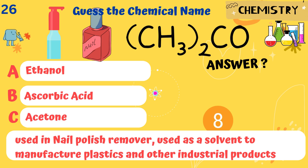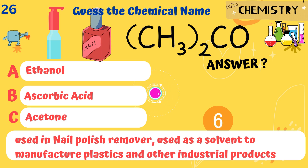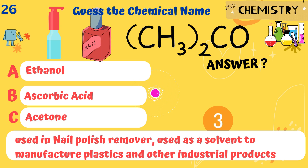C3H6O. It is used in nail polish remover and as a solvent to manufacture plastics and other industrial products. Answer: Acetone.